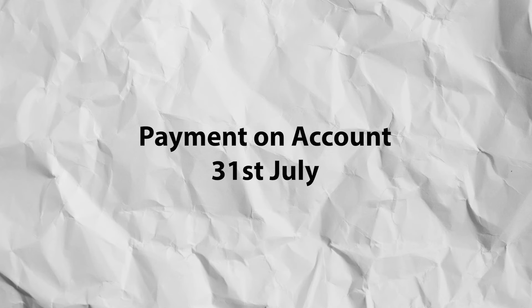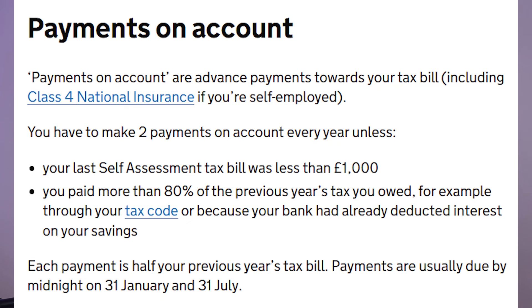The third deadline to be aware of for self-assessment is the second payment on account deadline, which requires anyone who is required to make a payment on account to do so by the 31st of July. The reason I say second payment on account is because the first payment is actually made by the end of January. A payment on account will usually be required for anyone who has a self-assessment tax liability exceeding £1,000, unless you've paid more than 80% of your tax bill at source — which generally means through PAYE.